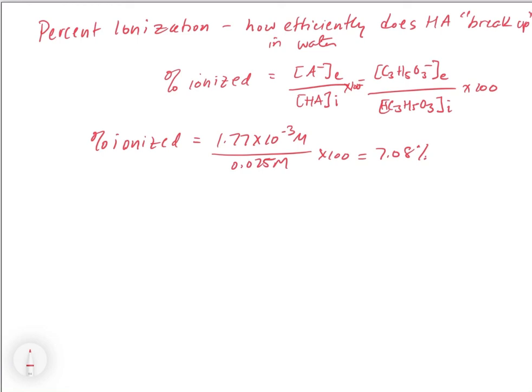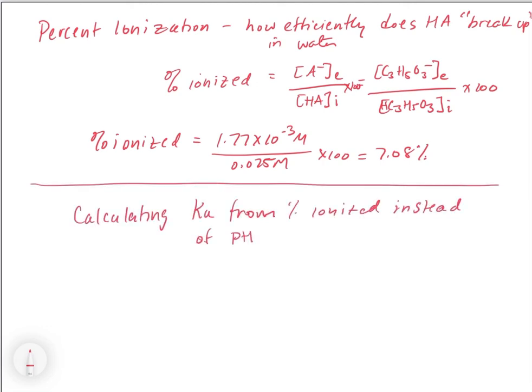Now, what would you do if we gave you the percent ionized and asked you to calculate the Ka from that? Let's look at the original problem from a slightly different perspective. What if instead of giving us the pH of 2.75, they gave us that the percent ionization was 7.08 percent — can you still solve the problem? Yes, you can. You can actually calculate the exact same Ka if you're given the percent ionized.